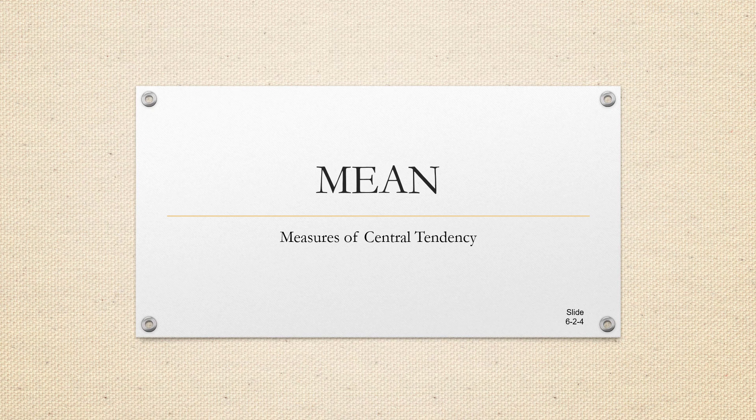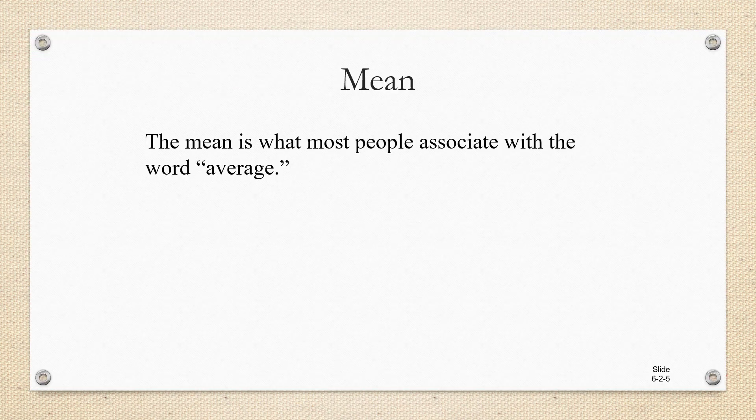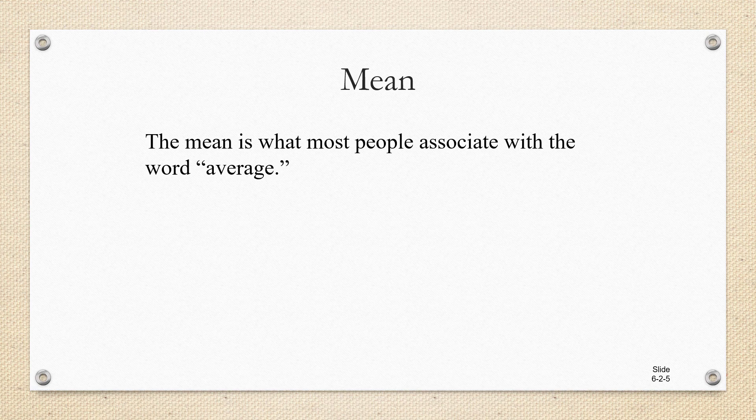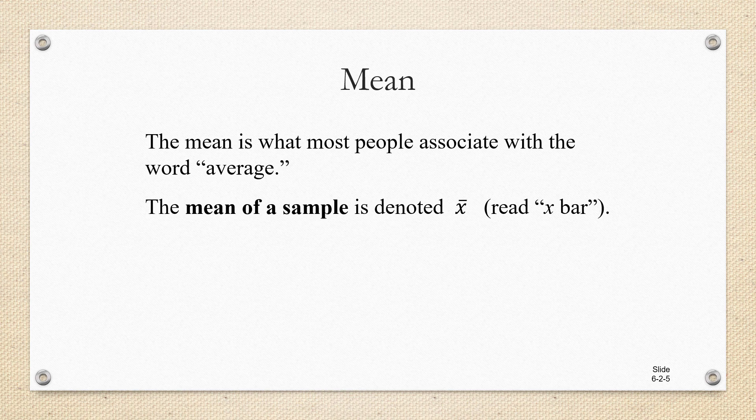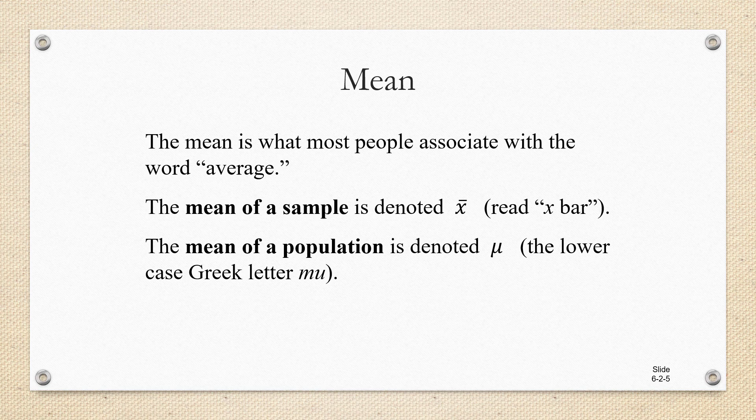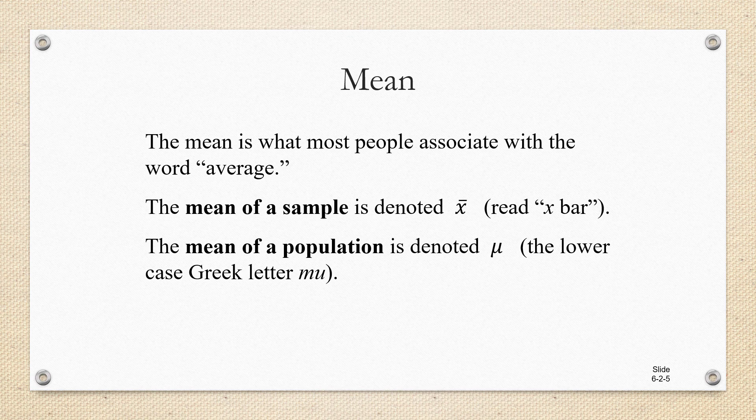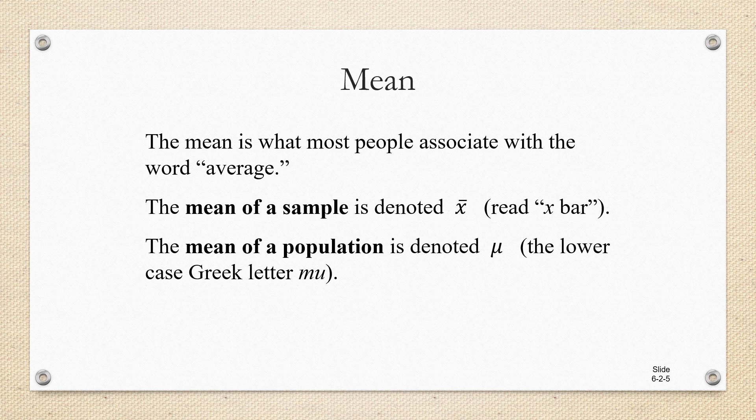Let's talk about the mean. The mean is what most people associate with the word average. The mean of a sample of data values is denoted as X bar, read as X bar. The mean of a population is denoted as mu, using the lowercase Greek letter mu. We use different notation for the sample versus the population because it's so important to distinguish between the two. But you'll find that the calculation for the mean is the same either way.